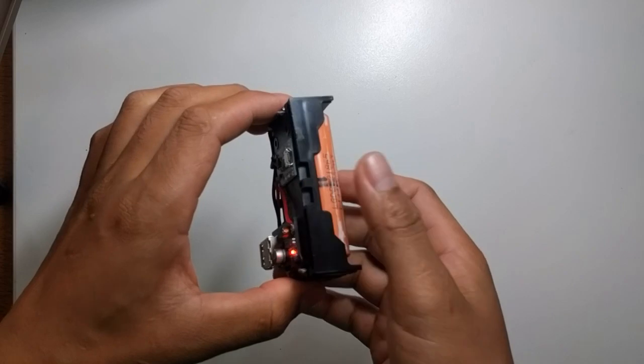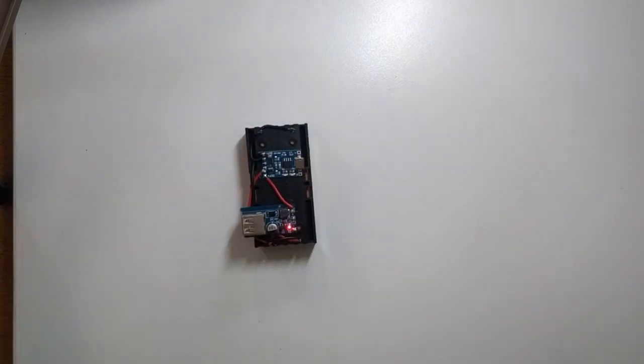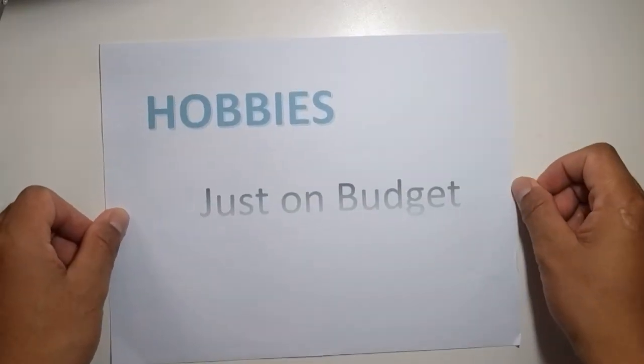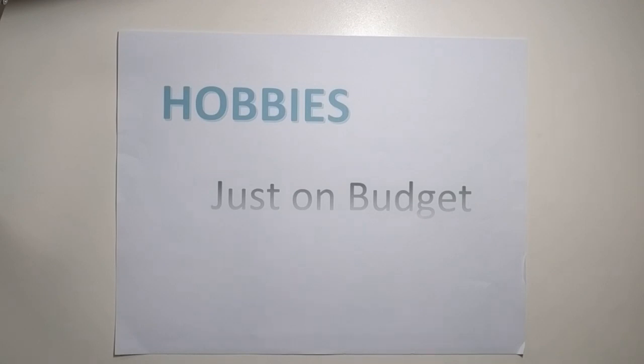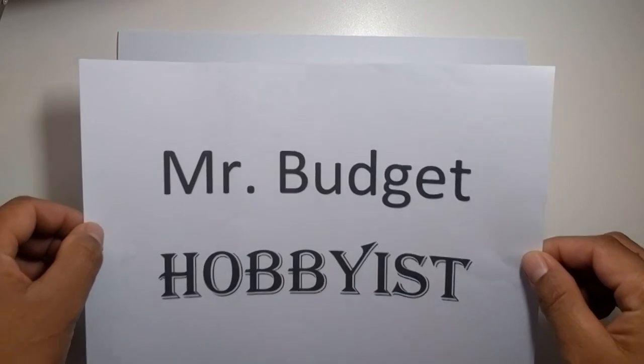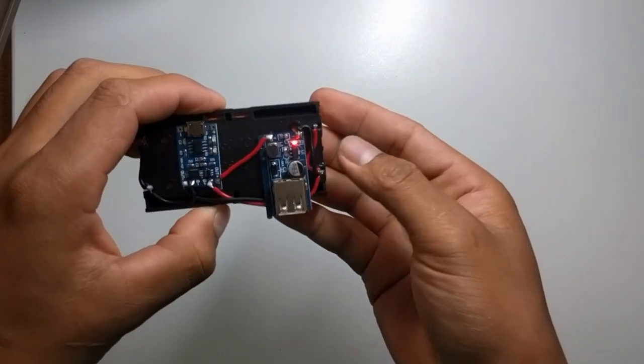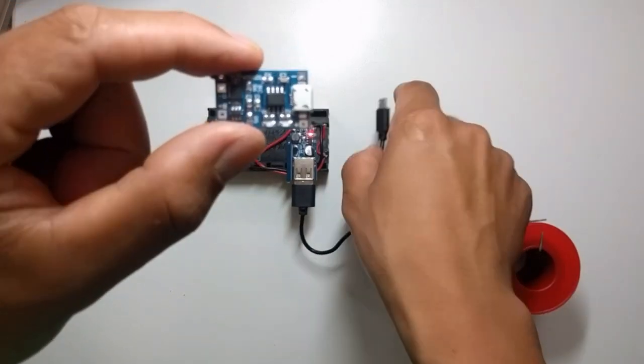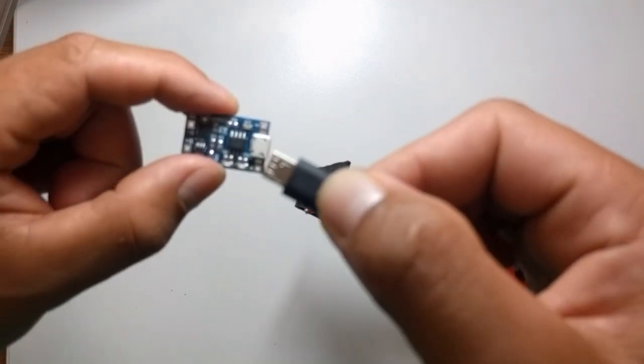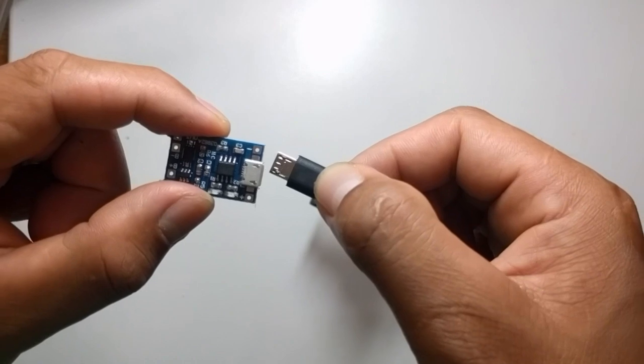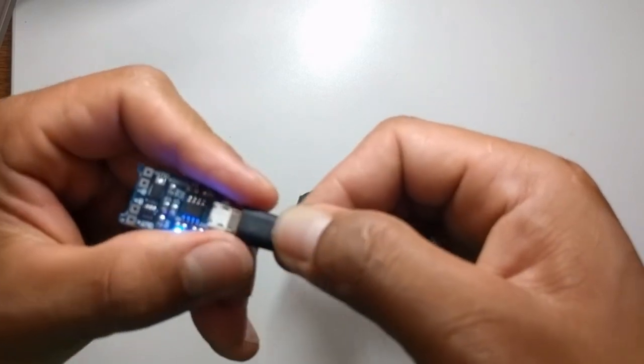In today's video, we will be building a simple power bank that uses 18650 battery. If you're building an electronic project that needs 5 volts or you need to charge your mobile phone, this project is suited for your need because it is very simple and budget friendly.